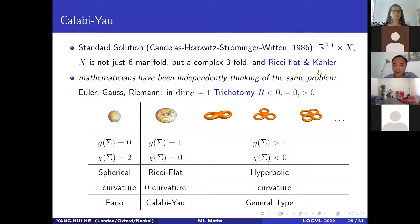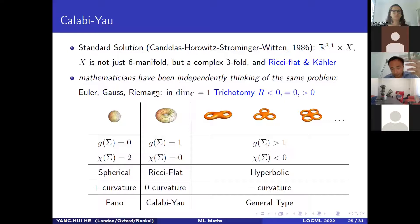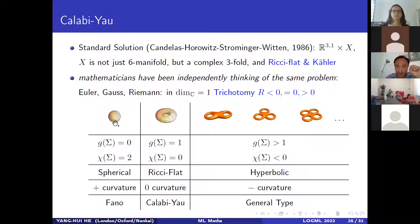Our favorite Kähler manifolds are of course the Ricci-flat ones. The physicists realized in 1986 that one of the standard solutions is a Ricci-flat Kähler manifold. The mathematics community has been considering Ricci-flat Kähler manifolds since the time of Euler and Gauss — think about Euler's classification of orientable smooth compact boundaryless surfaces by genus. Once we realize that real surfaces are complexifiable, smooth orientable compact surfaces are actually complex dimension-one objects, giving a beautiful trichotomy: spherical, Ricci-flat, and hyperbolic geometry.